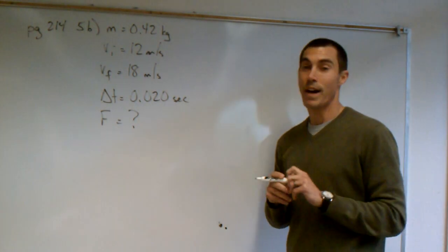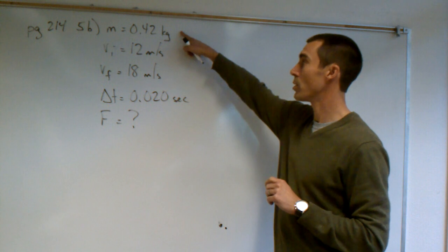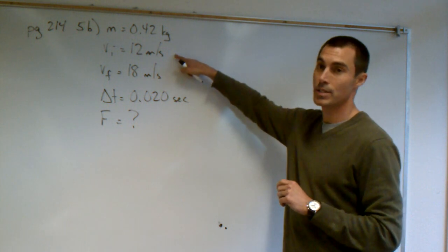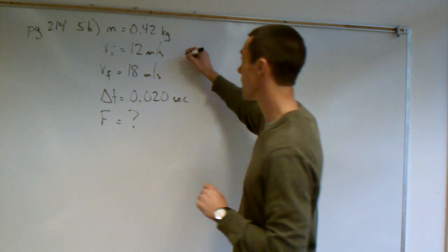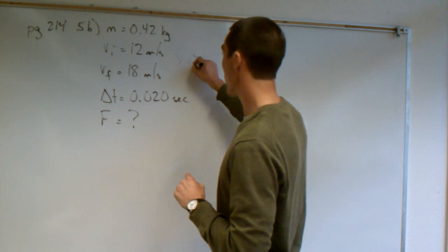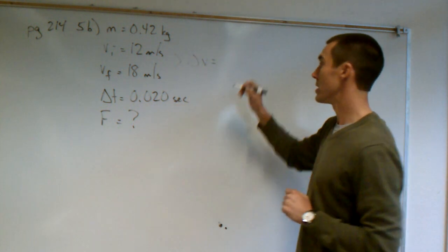All right, here's page 214, 5B. Our mass is 0.42 kilograms. Our initial velocity is 12 and our final is 18, which would give us a delta V of 6 meters per second.